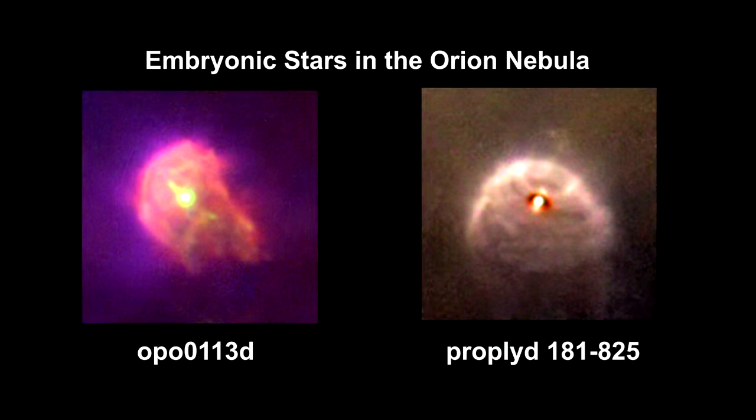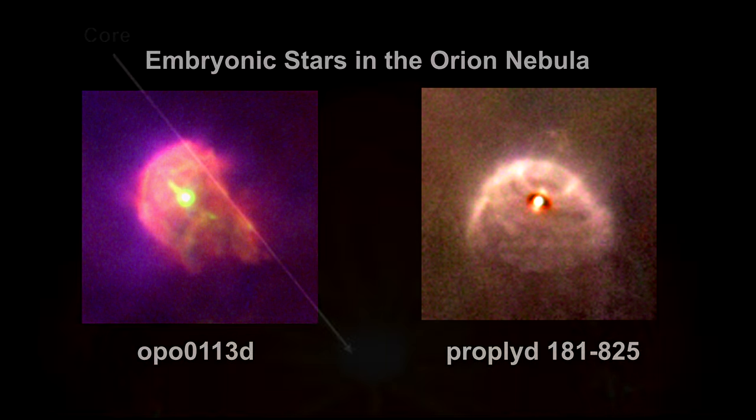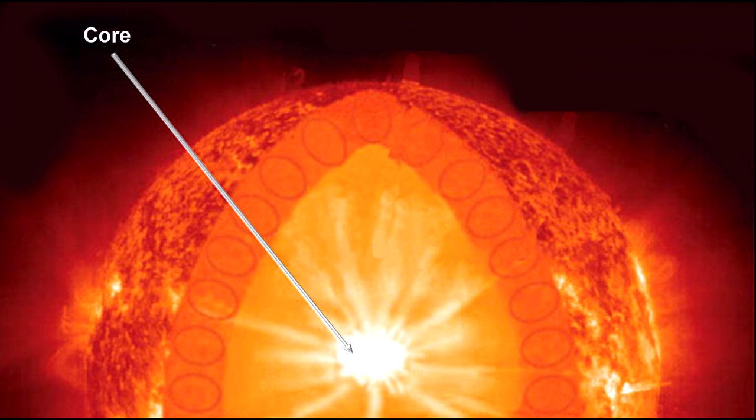The more hydrogen there is in the collapsing cloud, the more massive the star. The more massive the star, the more intense the pressure in its core. The more intense the pressure, the higher the temperature. The higher the temperature, the greater the star's luminosity.